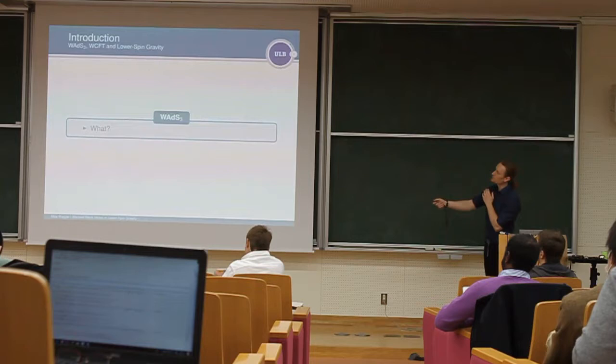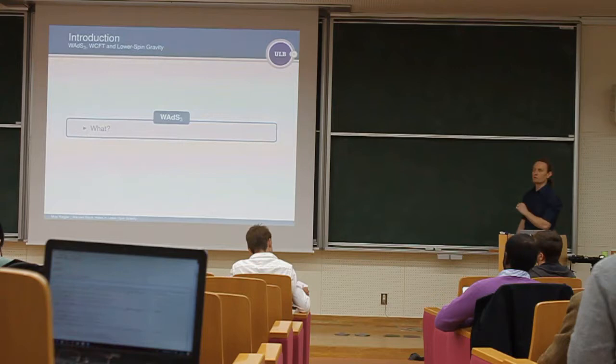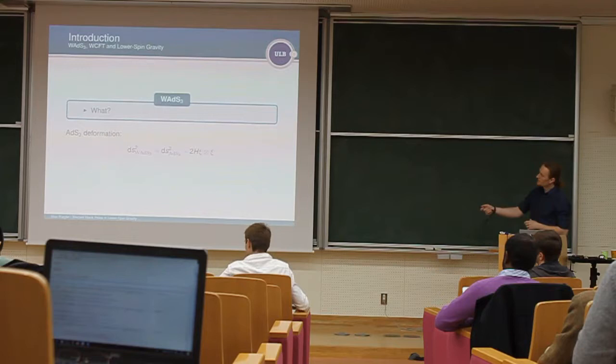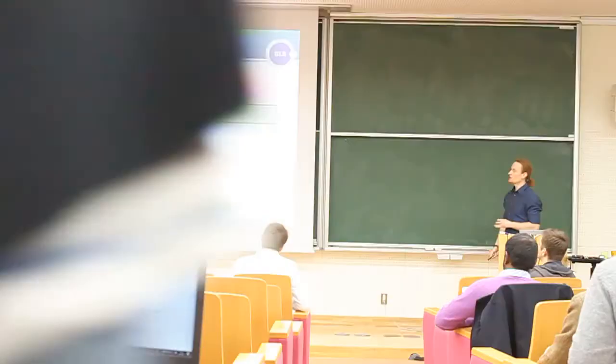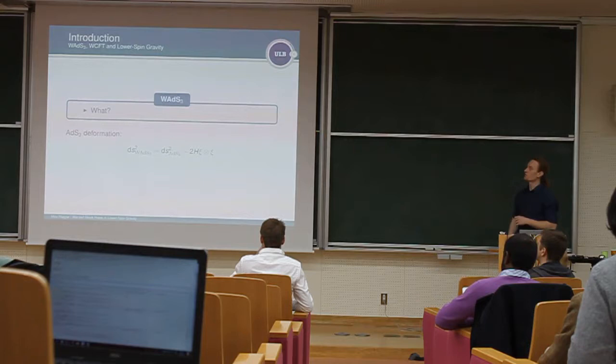So, before I get to the meat of my talk, I want to motivate three basic buzzwords which will appear throughout my talk. And the first one is Warped AdS3. So, first of all, what is Warped AdS3? As the name suggests, it's basically a deformation of AdS3. So, you basically take one of the killing vectors of AdS3, you take two vectors and form AdS3 in such a way.